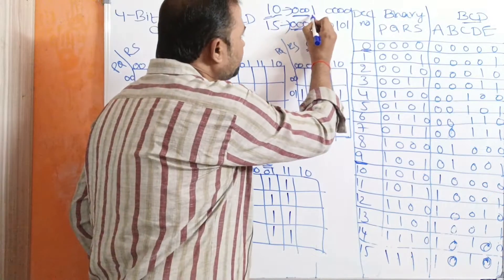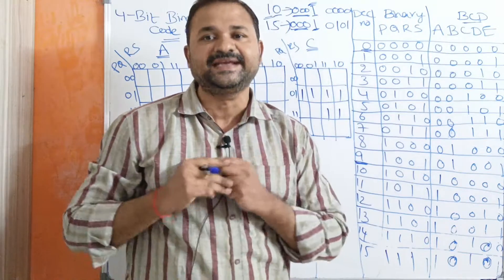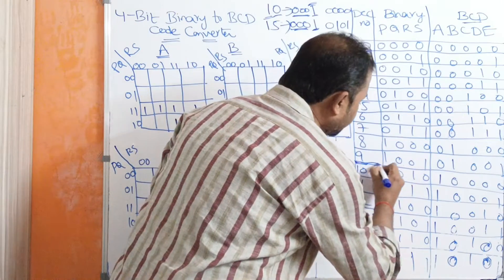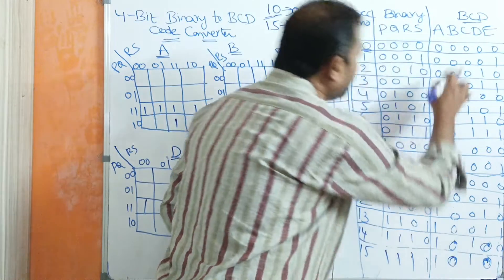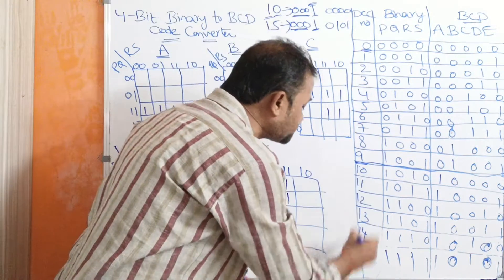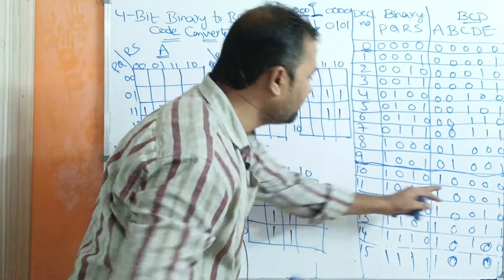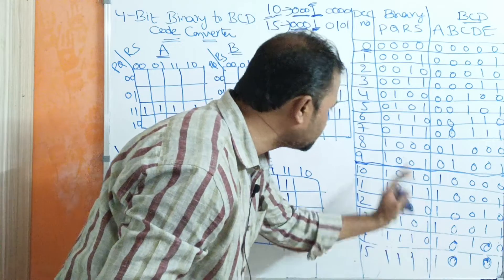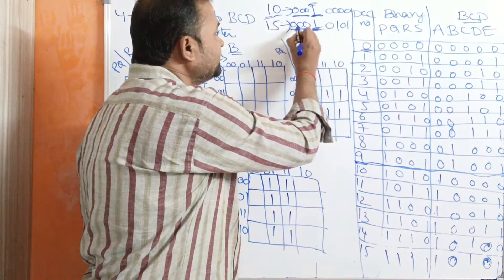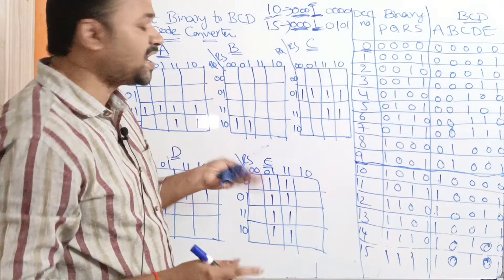But here, we need this bit also — the 5th bit. That's why we have taken A, B, C, D, E. For the numbers from 0 to 9, which are BCD numbers, the A value is 0. Whereas for the numbers from 10 to 15, the A value is 1. We are considering only this bit 1 for those entries; there is no need of the 3 zeros since we don't need to cover 0s in the Karnaugh map.